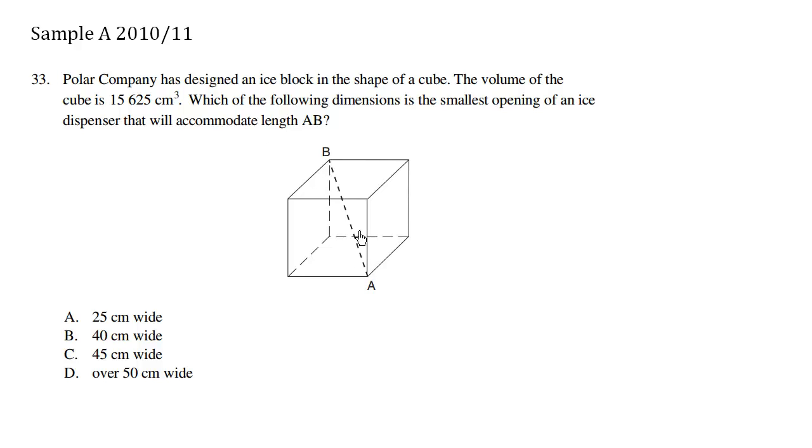So this here is a diagonal. We want to solve for AB because that's the longest length that we need to accommodate this ice dispenser. We know the volume of this cube is this much. To solve the actual length of one of these edges, it's going to be the cube root of that.